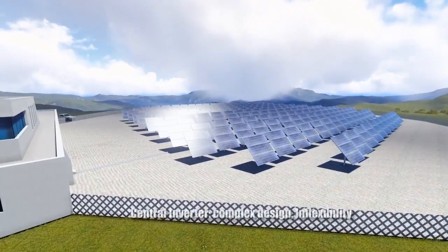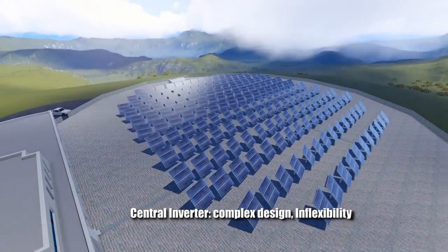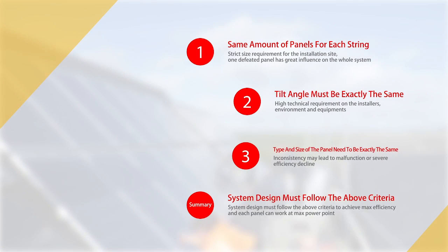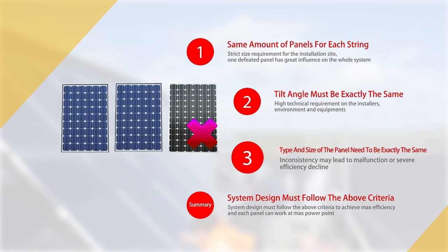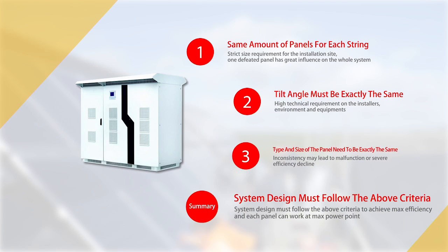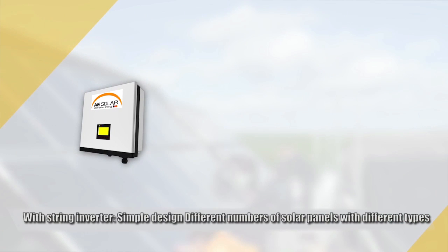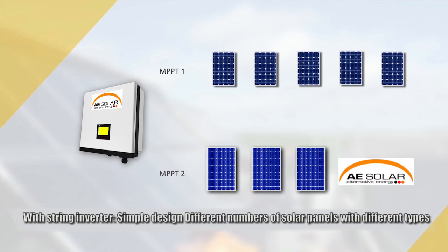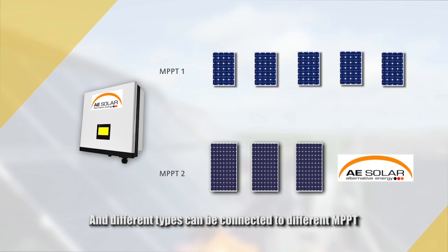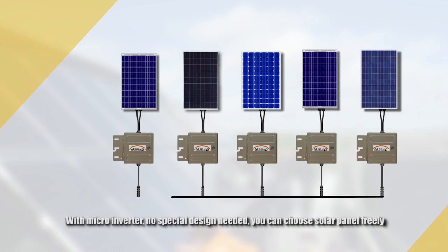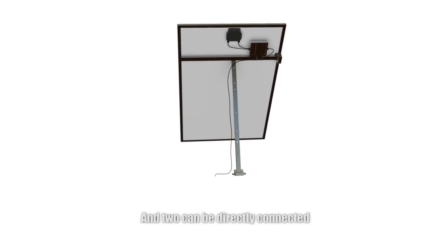Flexibility in system design: central inverters require complex and inflexible design — to ensure each string of solar panels works at the maximum power point, the number of panels, tilt angle, panel type, and size of each string must be exactly the same. With string inverters, the design is simple — different numbers of solar panels with different types can be connected to different MPPTs. With microinverters, no special design is needed; you can choose solar panels freely and they can be directly connected.